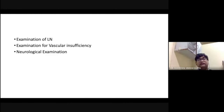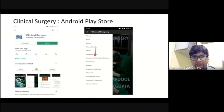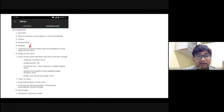After palpation, you will do examination of the lymph nodes, then examination for vascular insufficiency, and then neurological examination, which is a separate class. I have developed a clinical surgery app on the Android Play Store — you can download it and find information about all important cases including history and examination details for the ulcer. Thank you guys.